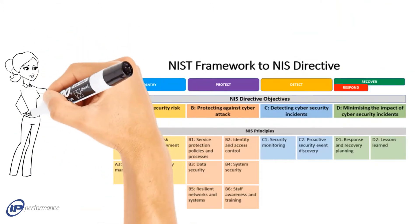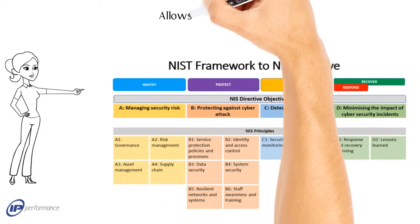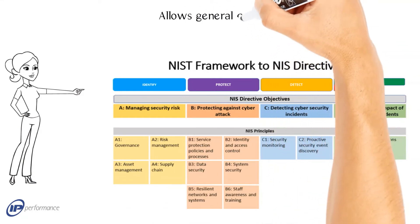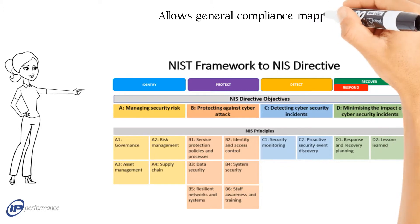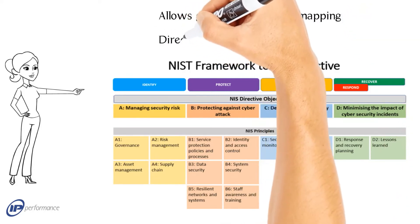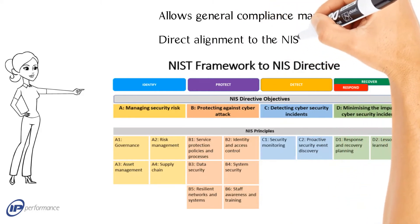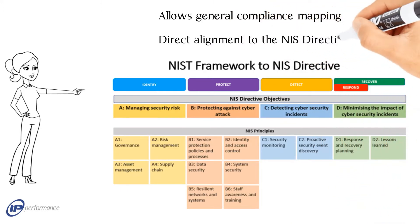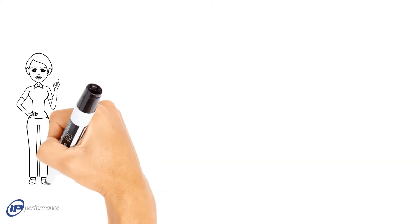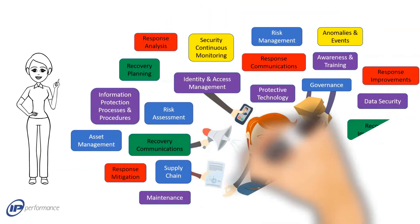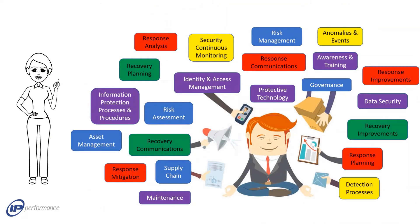In August 2017, the UK government published the first version of the NIS Directive to guide suppliers of essential services to the critical national infrastructure. As you will see in later slides, this directive is closely aligned to the NIST cyber security framework. In June 2018, the UK government published their Minimum Cyber Security Standard, which is also closely aligned to the NIST framework.